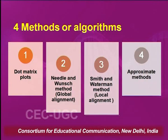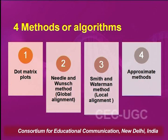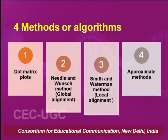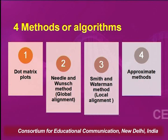Here we will be talking about four methods or algorithms in sequence alignment. I have deliberately kept my focus more on the biological part rather than the mathematics and computer part, because the audience is more of biology students. The four methods are: dot matrix, Needleman-Wunsch method for global alignment, Smith and Waterman method for local alignment, and approximate methods.